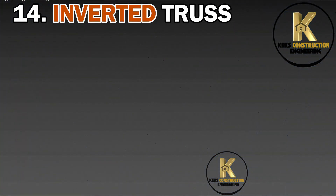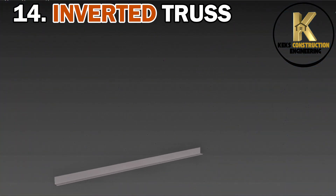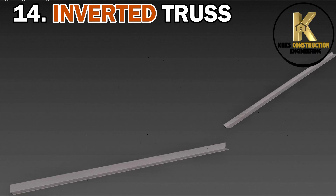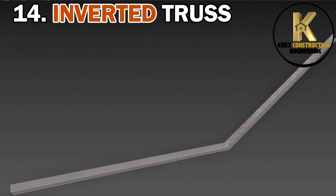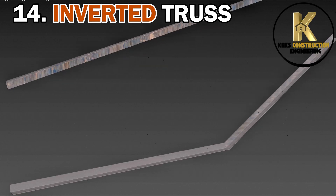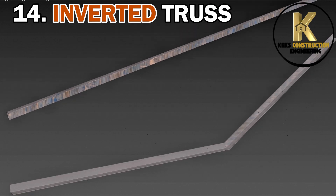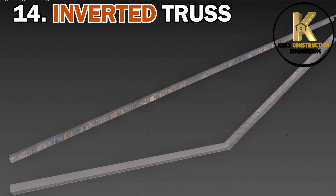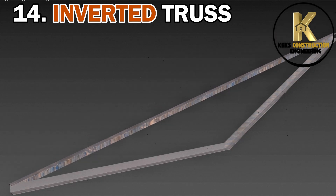14. Inverted Truss. This is an upside-down truss creating open space below, suitable for bridges, canopies, and industrial roofs.